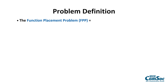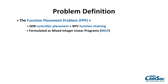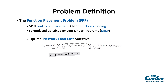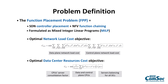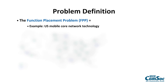We introduce the Function Placement Problem, which is a joint optimization of the SDN controller placement problem and the NFV function chaining problem. These have been formulated as Mixed Integer Linear Programs targeting different objectives, including: optimal network load considering the cost of both data and control plane networks, and optimal data center resource cost considering data and control plane CPUs, their distribution on servers, and achieving server load balancing across all data centers.